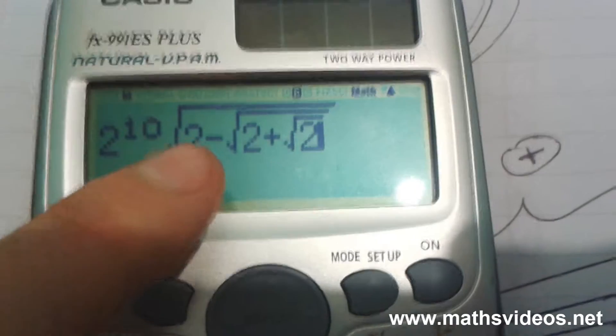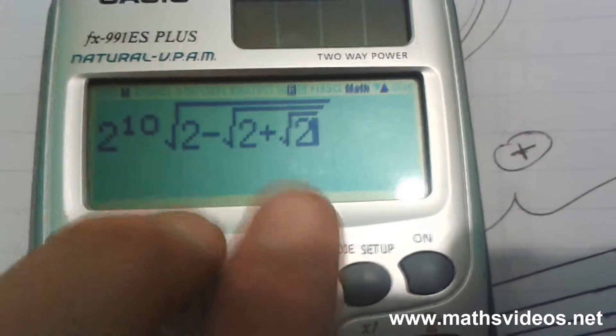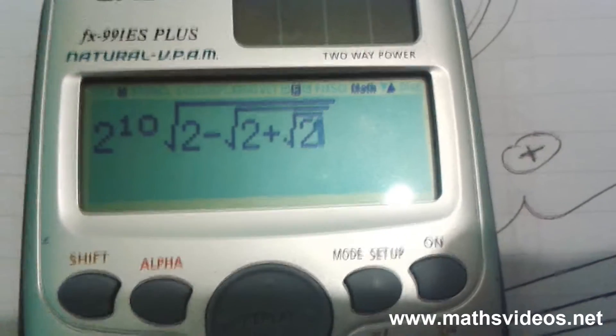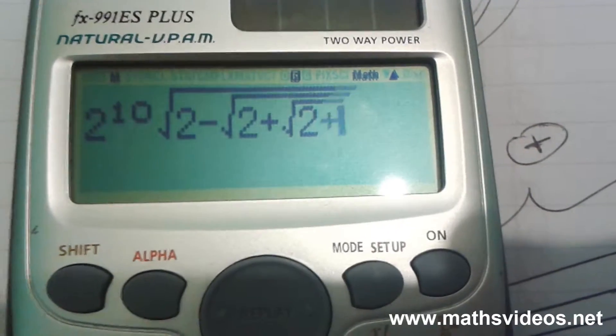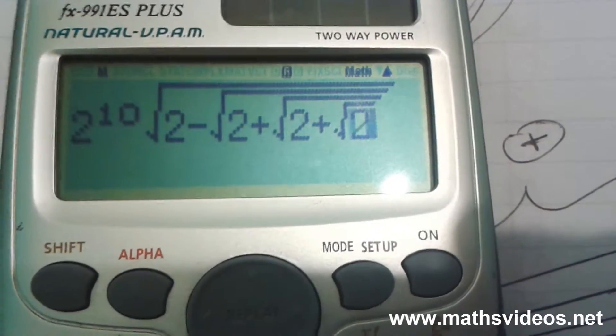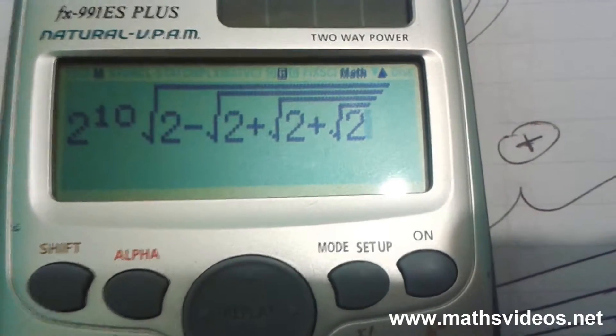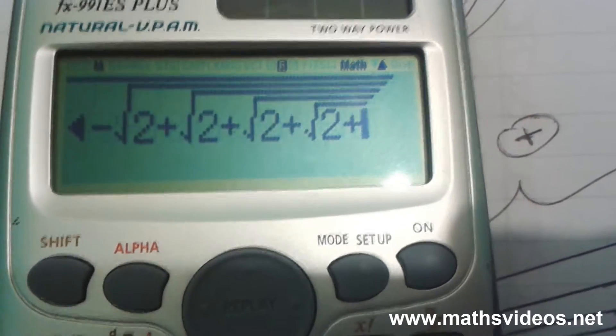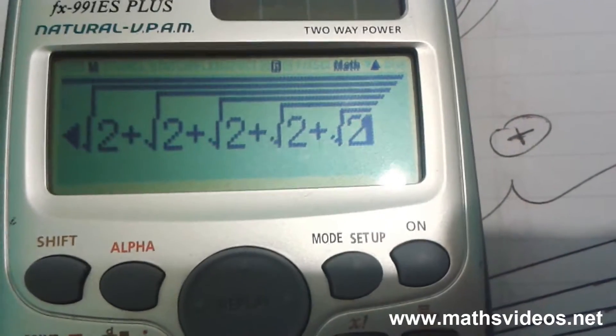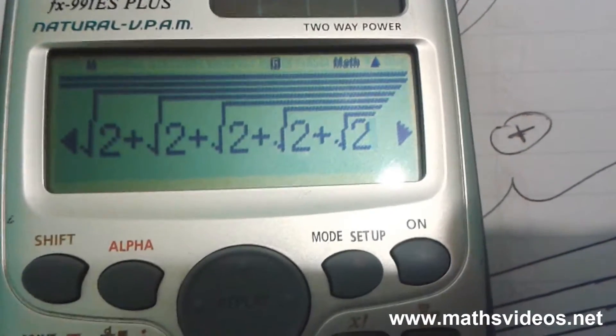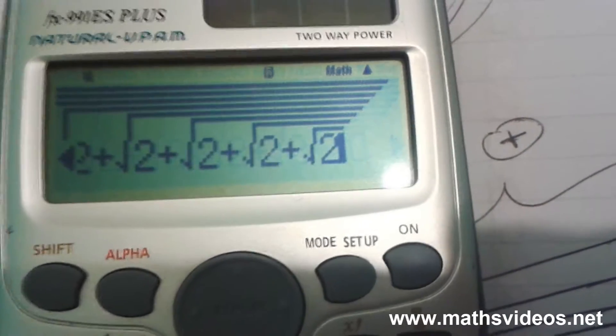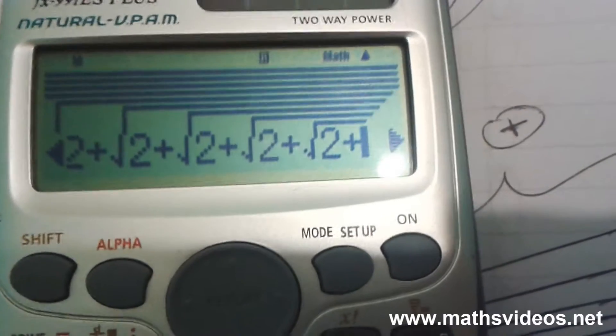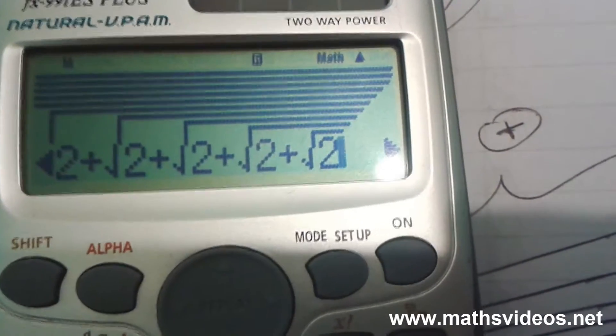Now, we're going to need 7 more 2s, right? Because we've got 1, 2, 3 over here. We're going to need 7 more 2s. So I'm going to put another plus root 2 here. So that's 4. Plus root 2 here, that's 5. Plus root 2 here, that's 6. Plus root 2 here, that's 7. Plus root 2 here, that's 8. Plus root 2 here, that's 9. Plus root 2 here, and that is 10.